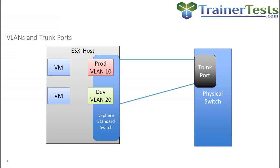Another option for our virtual machine port groups is VLAN designation. In this case, we have two virtual machines, each connecting to a different port group. The VM on the top connects to the prod port group with VLAN 10 assigned, and the VM on the bottom connects to the dev port group with VLAN 20 assigned. The standard switch connects to our physical network over something called a trunk port — a trunk port is any physical port or group of ports that can carry multiple VLANs over a single physical connection.